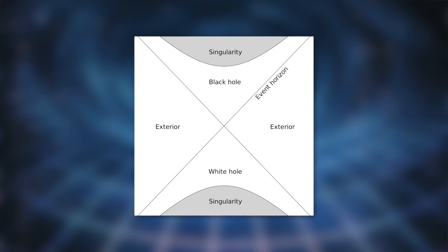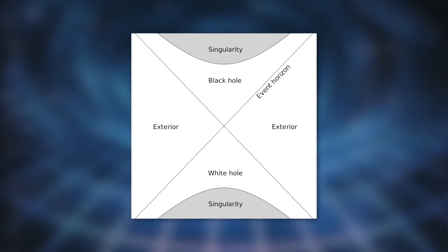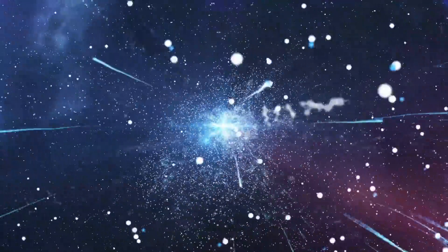These are the so-called white holes. In our following video, we would like to pursue the question of what these objects are in detail. Then we will look at what would happen if a white and a black hole collided with each other. We hope you enjoy this exciting topic.